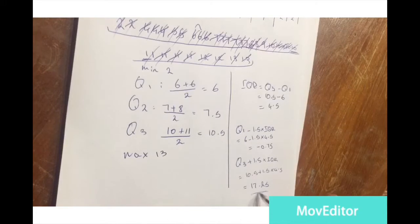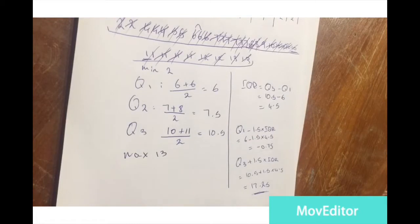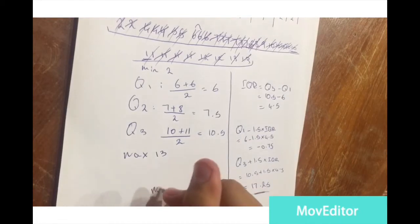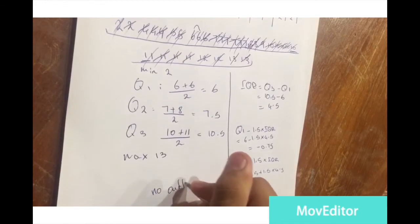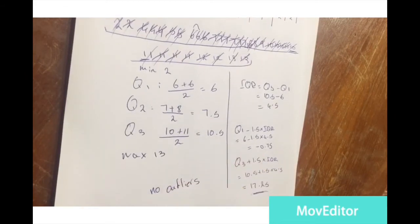There are no upper outliers and no lower outliers. So we write: no outliers. This finishes our video on quartiles.